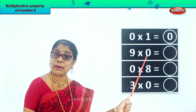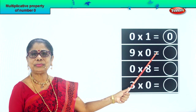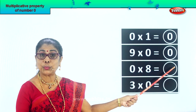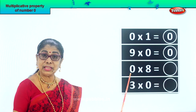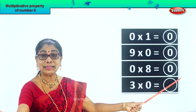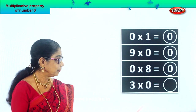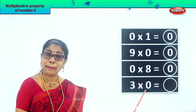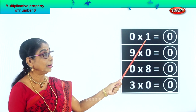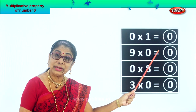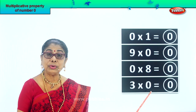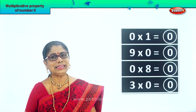Number nine multiplied by zero — nine into zero is equal to — good, what is the answer? Zero itself. Number nine multiplied by zero is equal to zero, very good. Next, you have zero into eight — zero multiplied by eight is equal to zero itself. And number three — three multiplied by zero is equal to zero itself. So: zero into one is equal to zero, nine into zero is equal to zero, zero into eight is equal to zero, and three into zero is equal to zero.